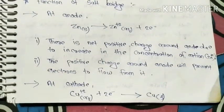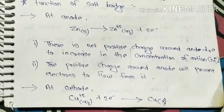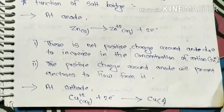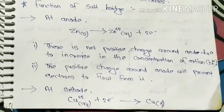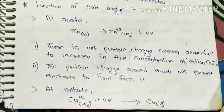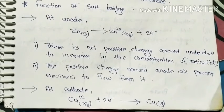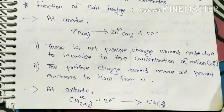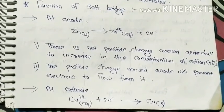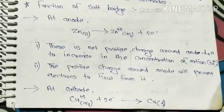At cathode, Cu²⁺ accepts 2 electrons to form Cu. The 2 electrons that zinc lost were accepted by copper aqueous solution. Cu²⁺ accepted those 2 electrons.